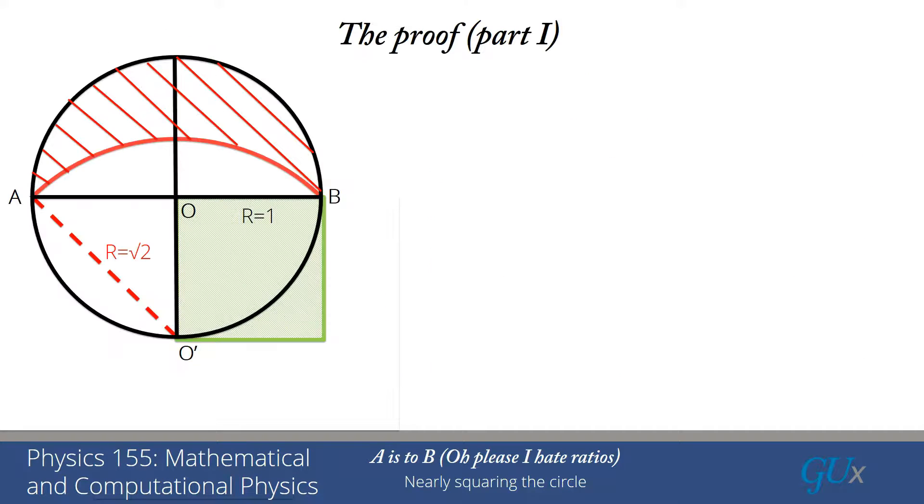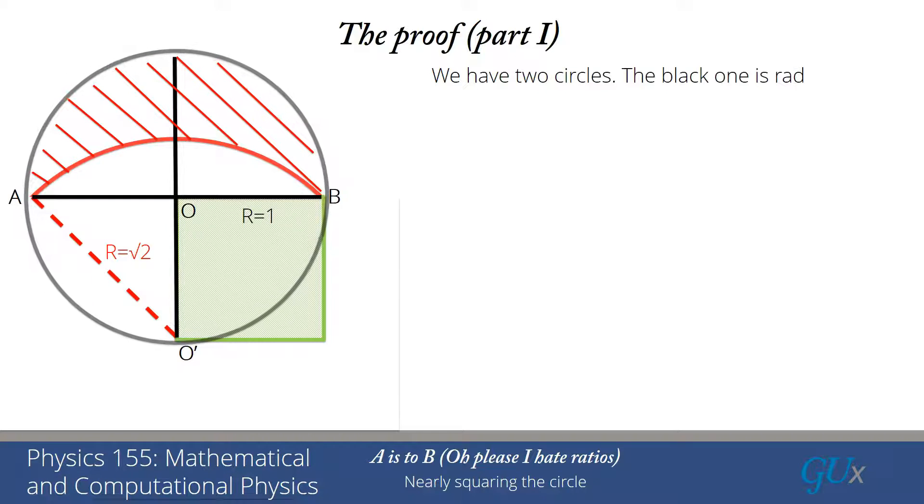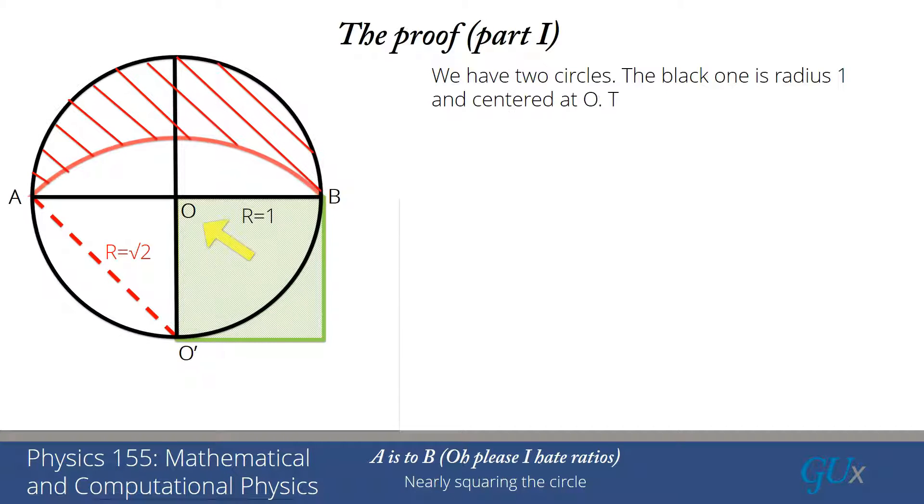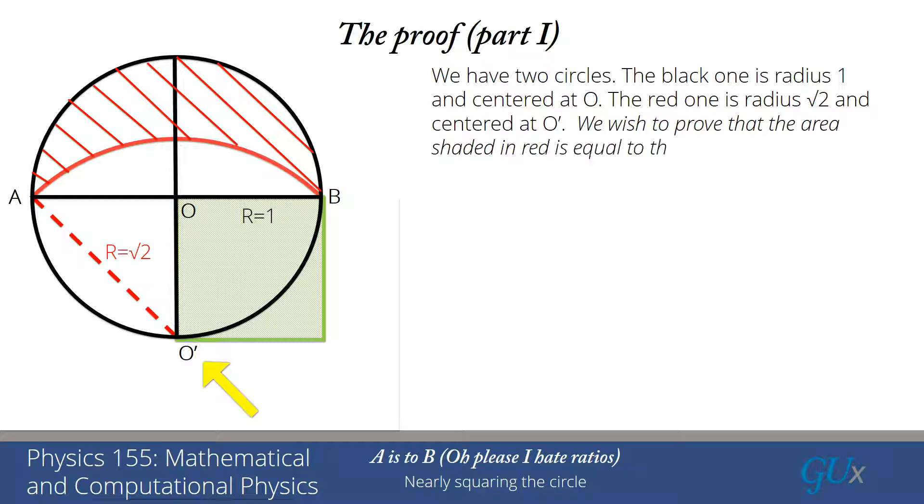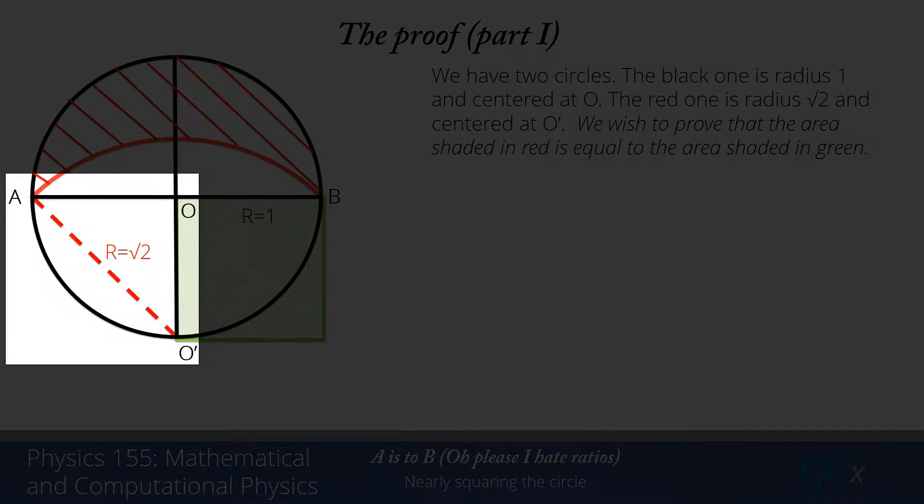Okay, on to the proof itself. Here is the picture. We have our two circles. The black one is radius 1, and it's centered at O. The red one is radius square root of 2, and it's centered at O prime. We determined that it's radius square root of 2 because you can see it forms a right triangle with the radius of the black circle as two of the legs.